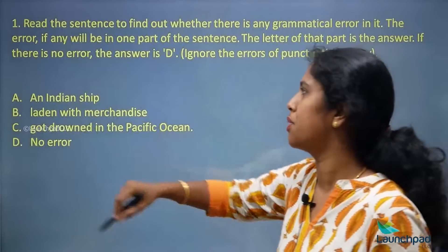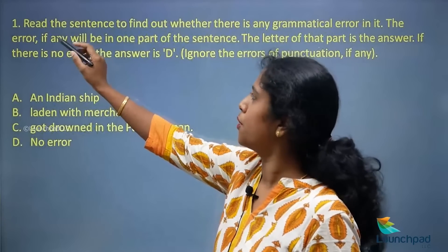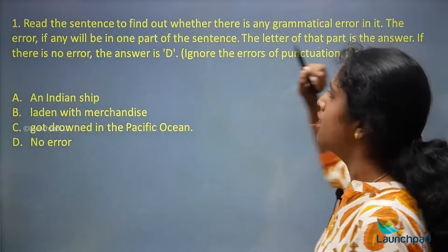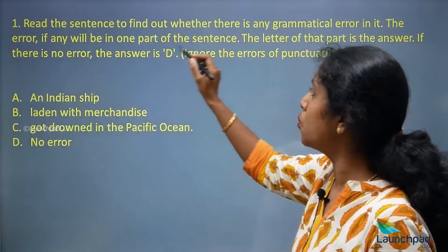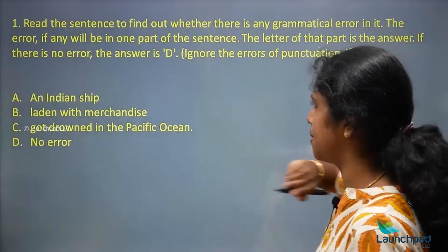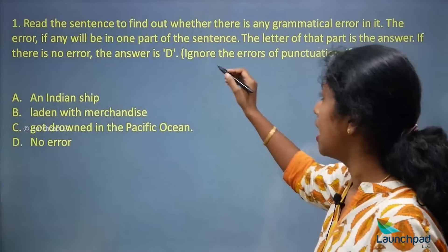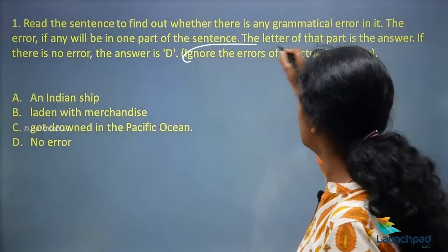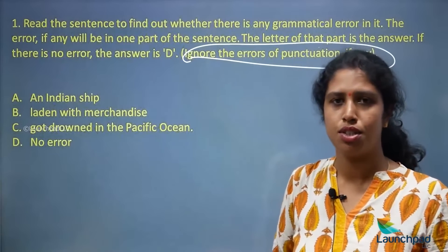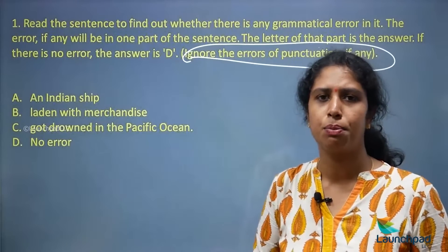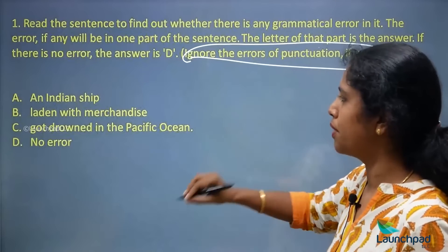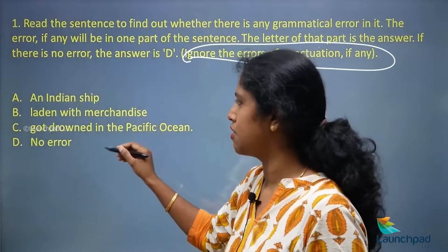Now let's look at how questions are given. Read the sentence to find out whether there is any grammatical error in it. The error, if any, will be in one part of the sentence, and the letter of that part is the answer. If there is no error, the answer is D. Note: ignore errors of punctuation. The sentence is fragmented into three parts: part A, part B, and part C.